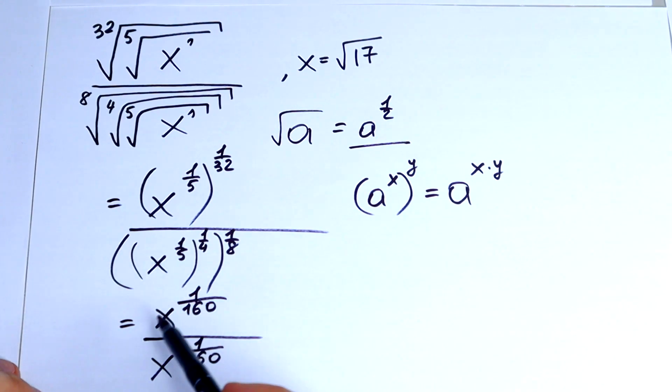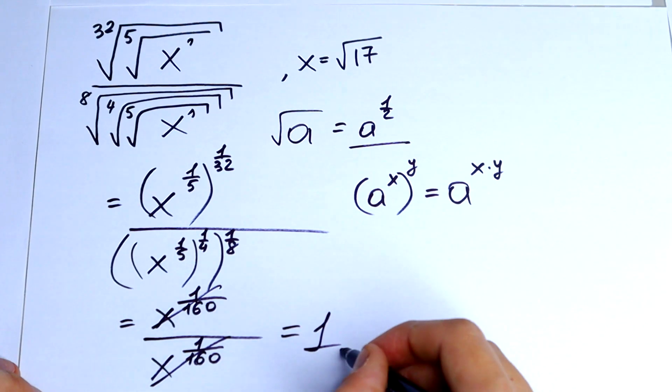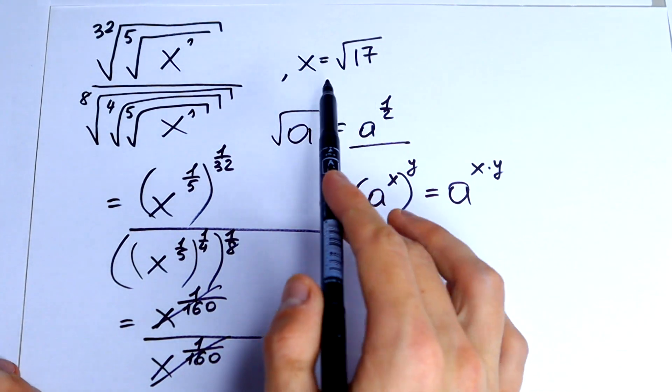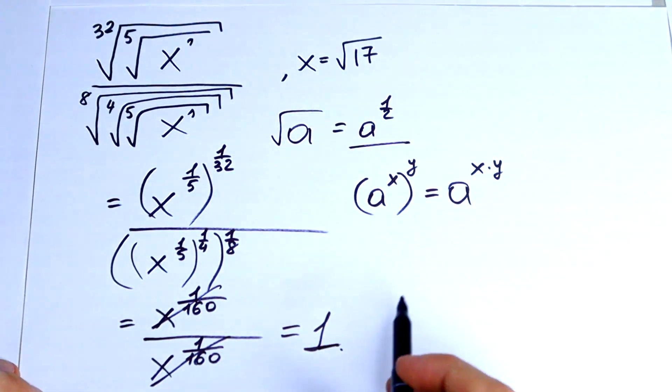So we can see that these both are similar, so we can cancel it. And the answer is 1. We don't need our value of x. So the answer is 1.